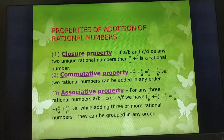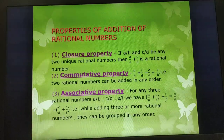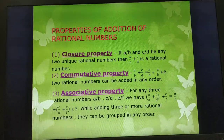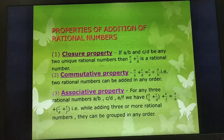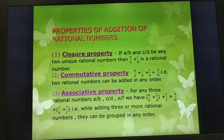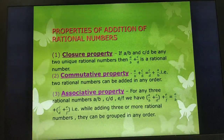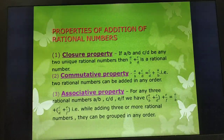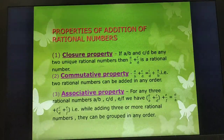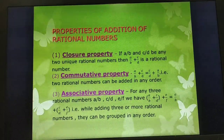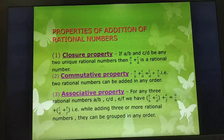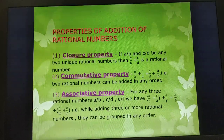Second is the commutative property: A/B + C/D = C/D + A/B. That is, two rational numbers can be added in any order. For example, 2 + 3 = 5, and if we change the order, 3 + 2 = 5. The answer remains the same, meaning when we interchange the order of rational numbers, the addition remains the same.